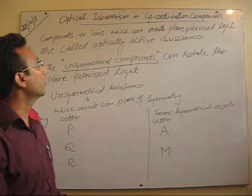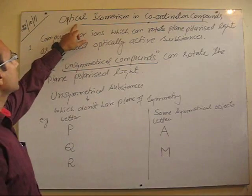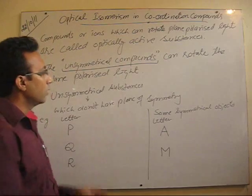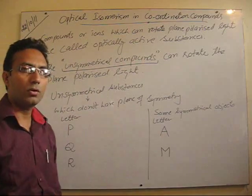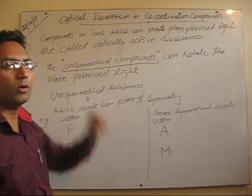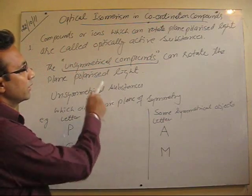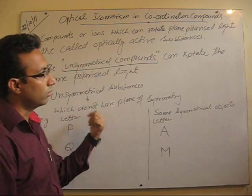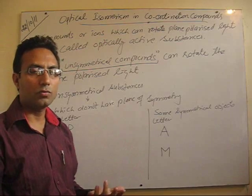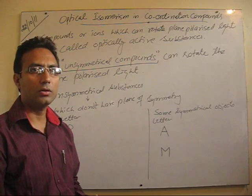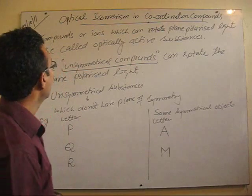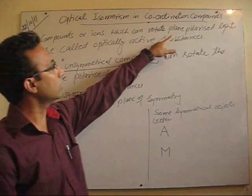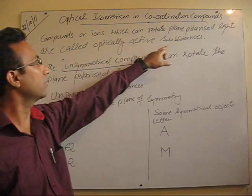Hello everyone. Yesterday we discussed about optical isomerism. In optical isomerism we saw the diagram I drew — the whole arrangement in a polarimeter. The polarimeter tells us whether a substance is able to rotate plane polarized light or not. If it rotates the plane polarized light towards right, it is dextrorotatory; towards left, it is levorotatory. Compounds or ions which can rotate the plane polarized light are called optically active substances.